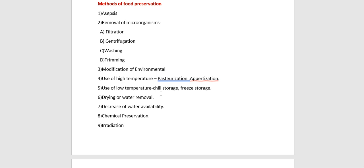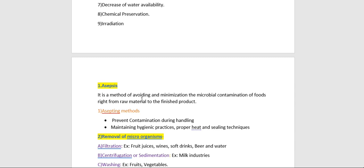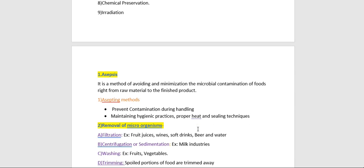The first method is asepsis. Asepsis is a method of avoiding and minimizing microbial contamination of foods right from the raw material to the finished product. Aseptic methods include: preventing contamination during handling from the point of harvest, maintaining good hygienic practices, and applying proper heat treatment and sealing techniques.